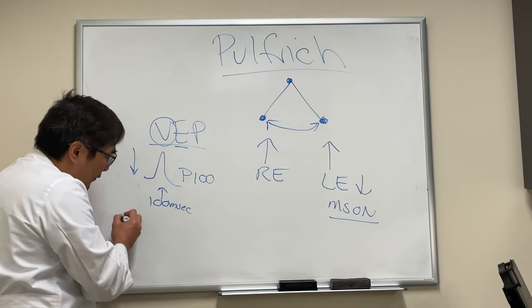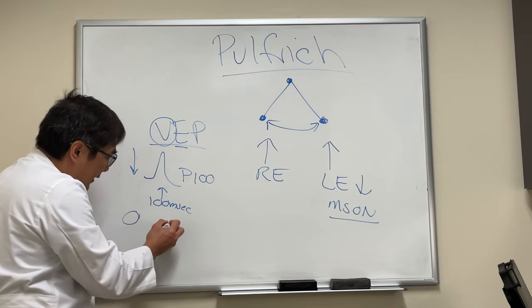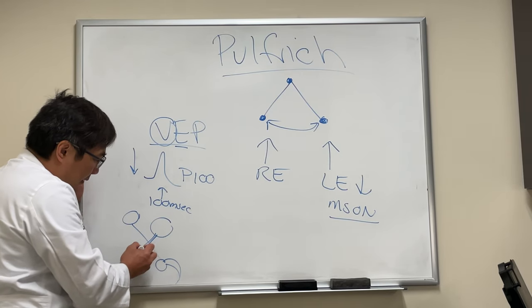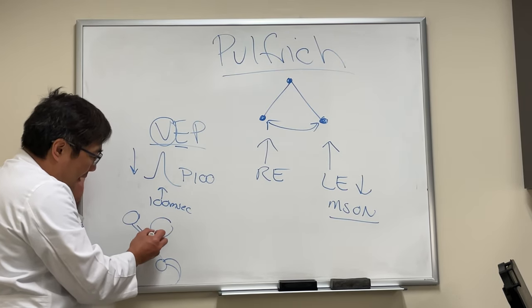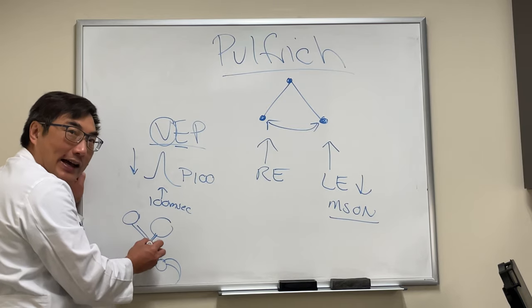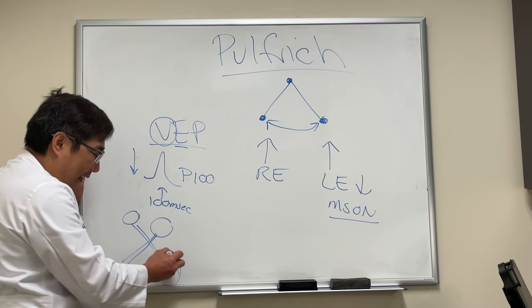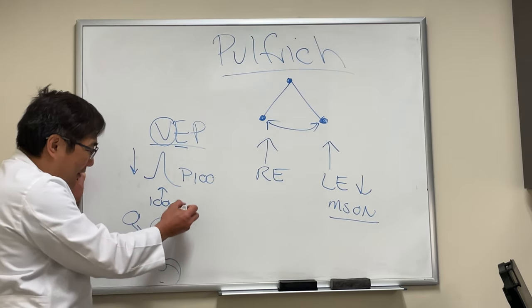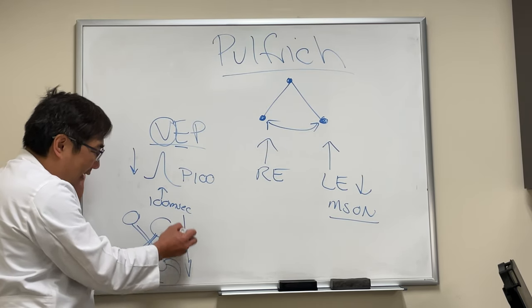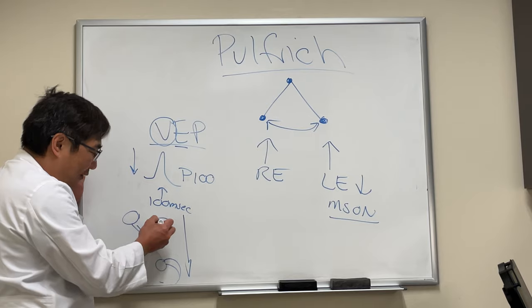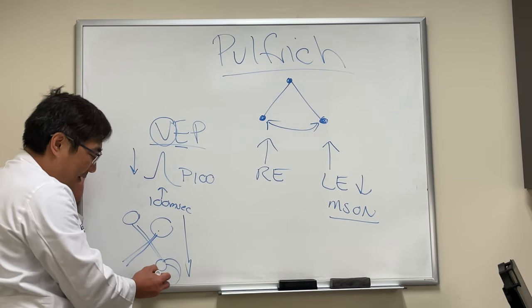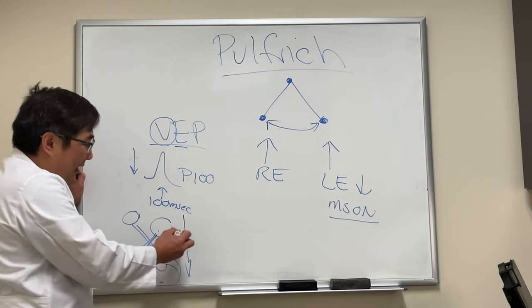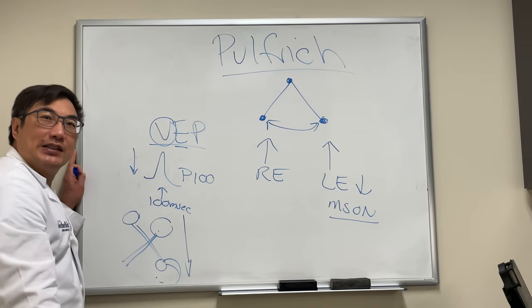That signal has to be transmitted along the optic nerve, the chiasm, the geniculate, and the radiations to the cortex. So it takes a little bit of time for the light signal to travel from the eye to the cortex. This is what a VEP is measuring.